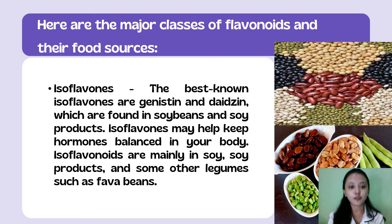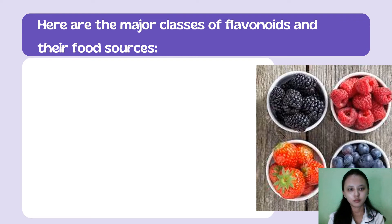The next is isoflavones. The best known isoflavones are genistein and daidzein, which are found in soybeans and soy products. Isoflavones may help keep hormones balanced in your body. They are mainly in soy, soy products, and some other legumes such as fava beans.